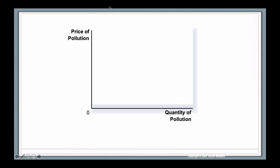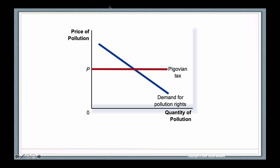A Pigovian tax basically sets the price of pollution. It says that for each unit of pollution, you have to pay some amount. And that tax basically sets the price for companies to pollute.